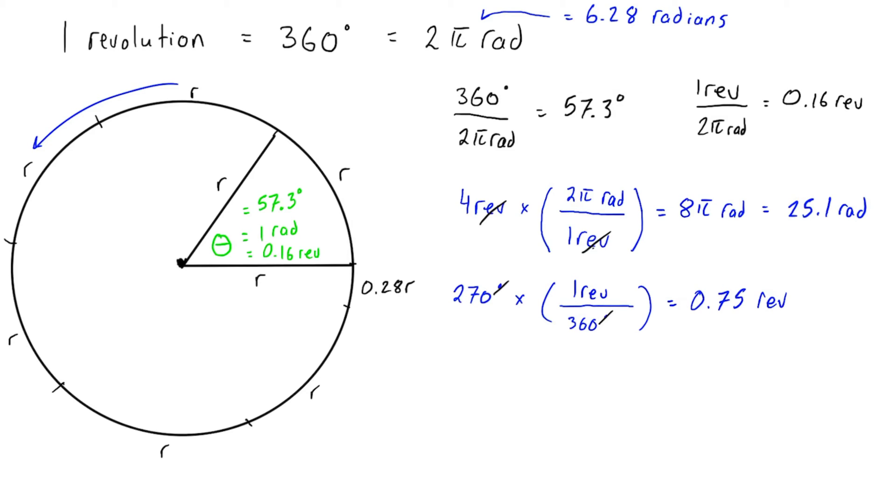Let's do one more conversion from radians to degrees. Let's say we have 8π radians, like this number here, and let's convert that to degrees. We're going to multiply by the fraction where radians is on the bottom—2π radians—and 360 degrees on the top.